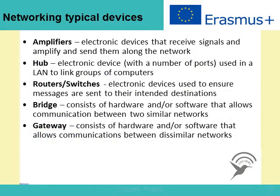What kind of devices can we find in a network? From less to more complex: amplifiers are electronic devices that amplify the signal, allowing us to increase the reachability of a link. However, they also amplify noise, so we cannot reduce the bit error rate using amplifiers.